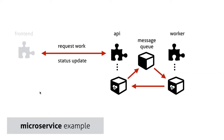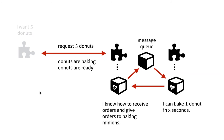So for today, we're going to use this microservice example. I created a really small example. We have a frontend, an API, and a worker. With the frontend, which is an HTML frontend, we can request some work. We basically tell the API, 'I've got work.' The API knows how to post that work in a message queue. On the other side, we have a worker waiting for work, and it finds the work, does it, and then signals back to the API saying the work is done. In my example, with the frontend I can say I want five donuts, I request five donuts, and then my API knows how to receive the orders and give the orders to the baking minions in the message queue. Then the worker knows it can bake one donut in a couple of seconds, and when that donut is done, it signals back to the API, and in the frontend I get the signal that it's done.